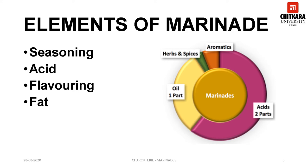The third element is herbs and aromatics such as garlic, onion and even chilies. And the fourth element is a fat to bring it all together. It could be olive, peanut, salad or refined oil. Flavored oils such as garlic oil, chili oil and herb oil can also be used. The oil in the marinade helps to prevent moisture loss.